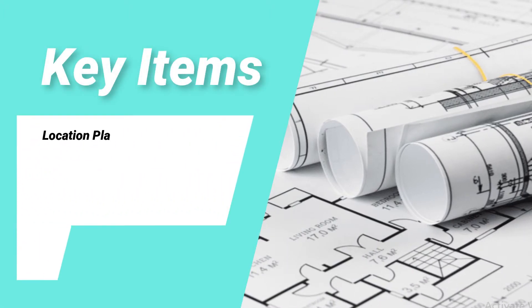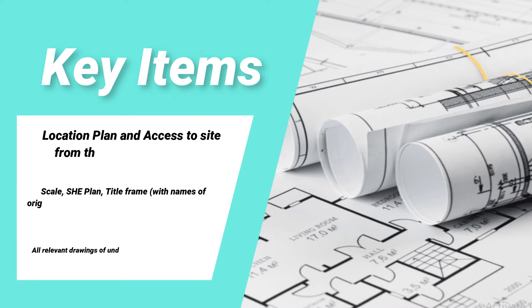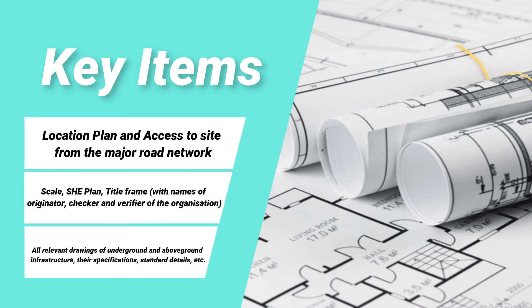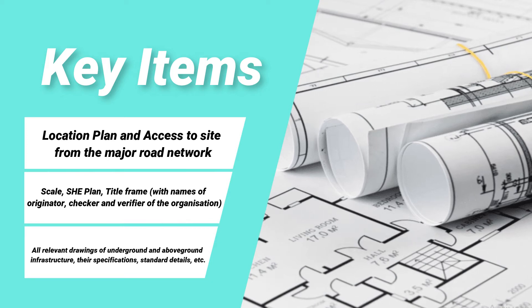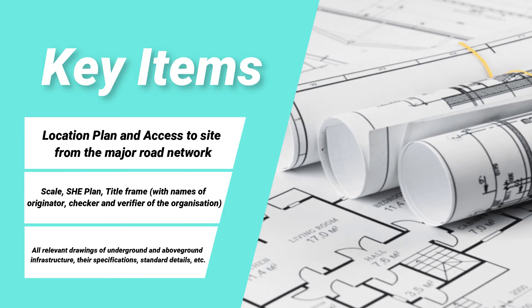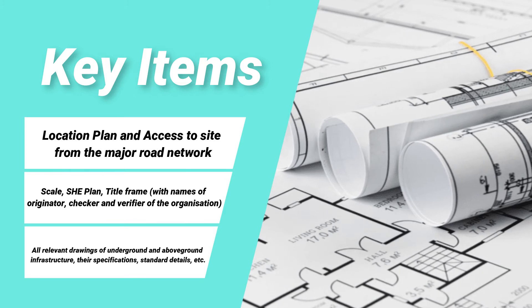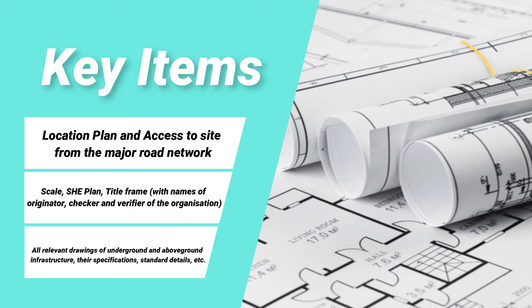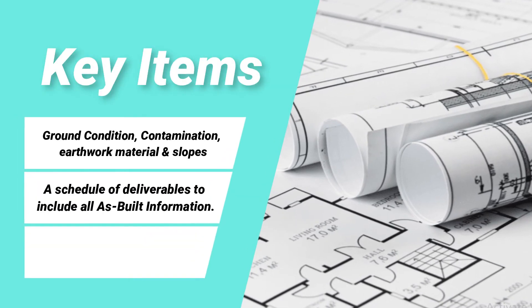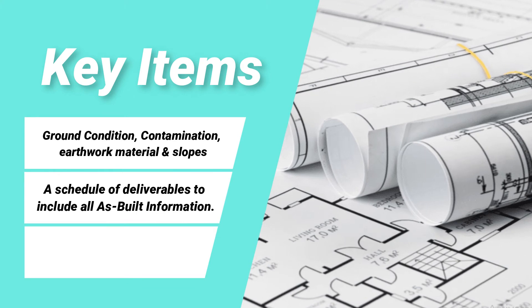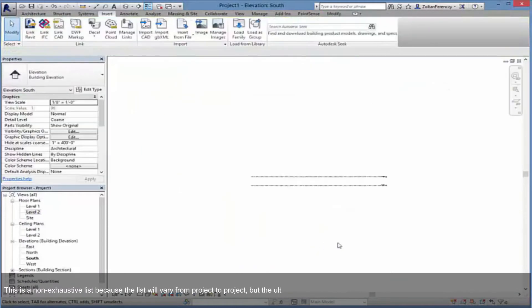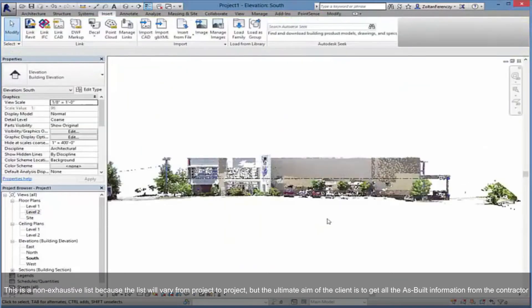The following are the key items recommended to include within the as-built package: a location plan and access to site from the major road network; a scale SHE plan; a title frame with names of the originator, checker and verifier of the organization; all relevant drawings of underground and above-ground infrastructure, their specifications and standard details; ground condition, contamination, earthwork material and slopes; and a schedule of deliverables to include all as-built information.